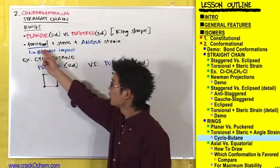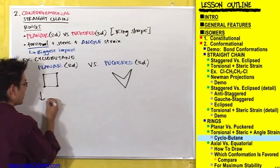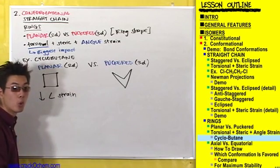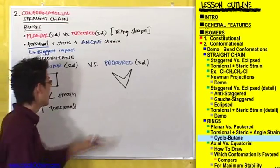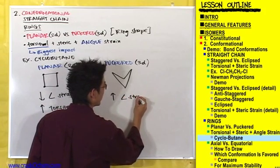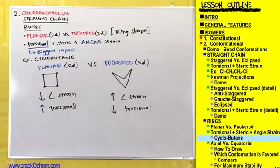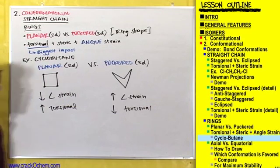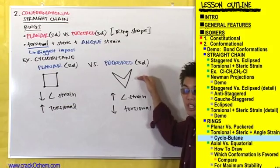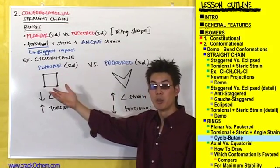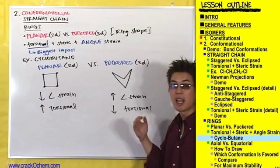To illustrate the point about torsional strain having the biggest impact on ring shape, the planar conformation has less angle strain but more torsional strain, whereas the puckered conformation has greater angle strain but less torsional strain. According to experimental evidence, cyclobutane exists in the 3D puckered conformation 99% of the time and the planar 2D conformation only about 1% of the time. This proves that lower torsional strain is more important — it makes a bigger difference in how stable the compound is.